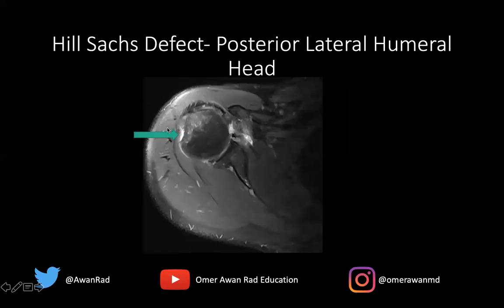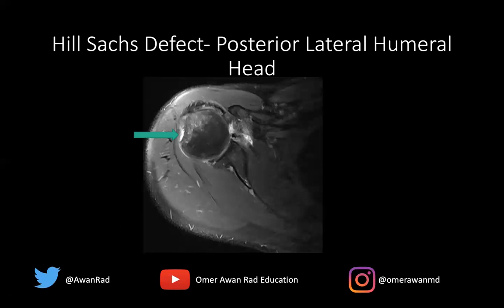This is what a Hill-Sachs defect looks like along the posterior lateral humeral head on an axial image — anterior, posterior, medial, lateral. There's a defect here: we lose the normal sphericity of the humeral head. There is also bone marrow edema along the lateral aspect from the contusion. Importantly, we only call this on the more superior axial slices where you can see the coracoid process of the scapula. As you scroll inferiorly, there is a natural posterior lateral defect, so we never call a Hill-Sachs lesion on those inferior slices.